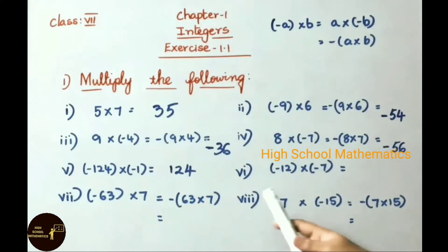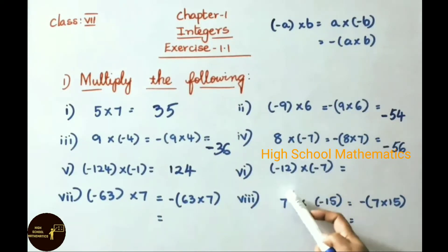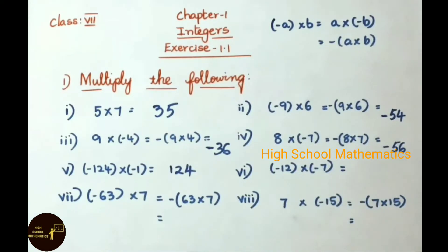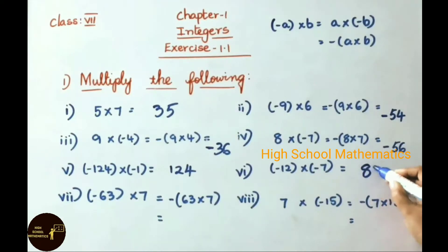See the sixth sum: minus 12 into minus 7. Minus into minus gives plus, 12 sevens are 84. So the answer is 84.